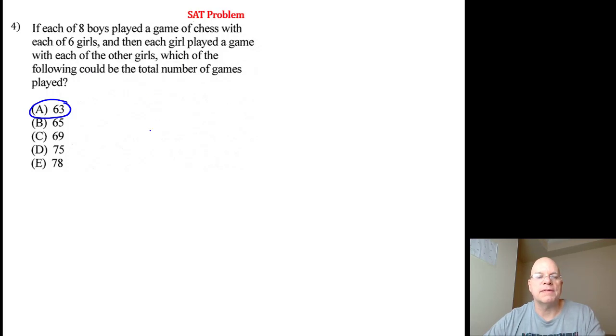Let's think of this as two separate problems. Each of the eight boys, so we've got eight boys to choose from, played a game of chess with each of six girls. That's going to be 48 matches: eight boys multiplied by six girls equals 48 matches when the boys play the girls.